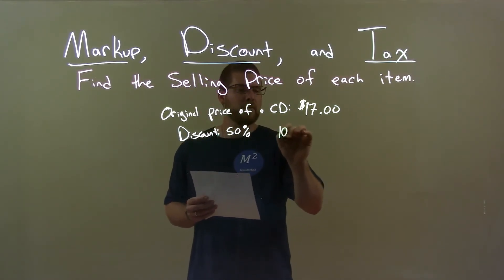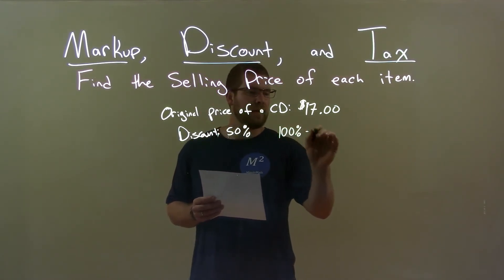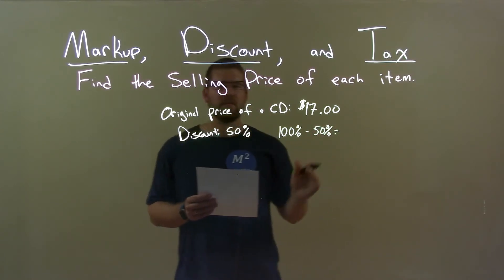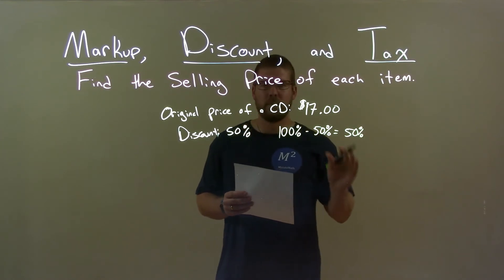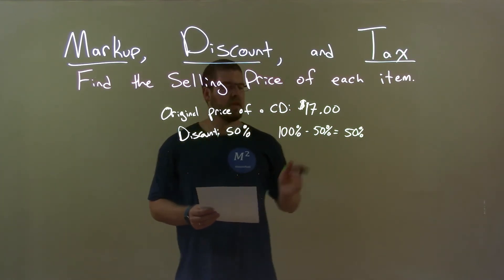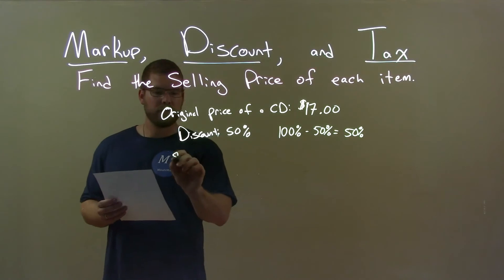Well, we take 100% minus our discount, which is 50%, and that gives us how much we're going to pay at the original price, which is 50%. Kind of repetitive, but it's important to know that step. So now we take the original price, $17,